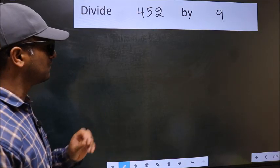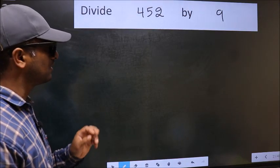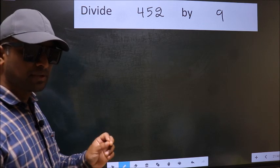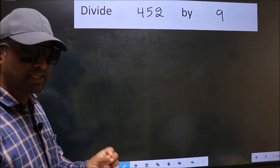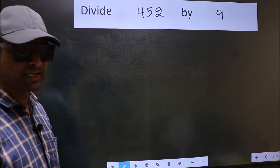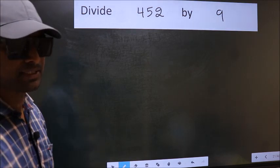Divide 452 by 9. While doing this division, many make a mistake. What is the mistake that they make? I will let you know. But before that, we should frame it in this way.